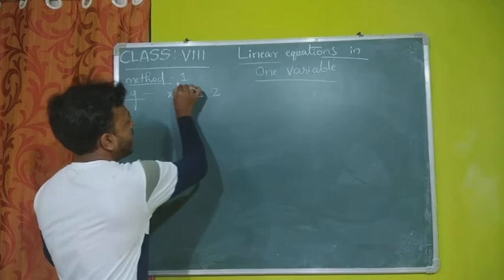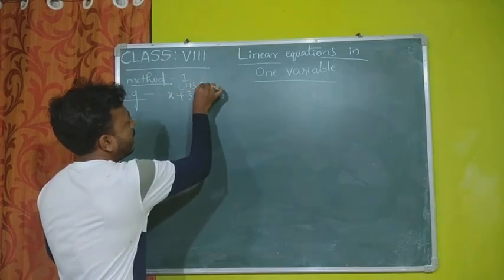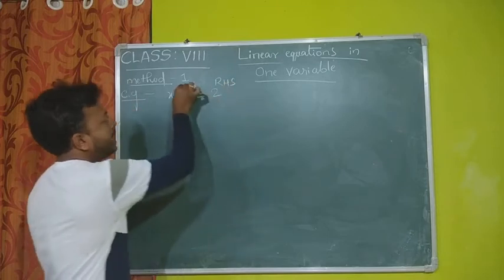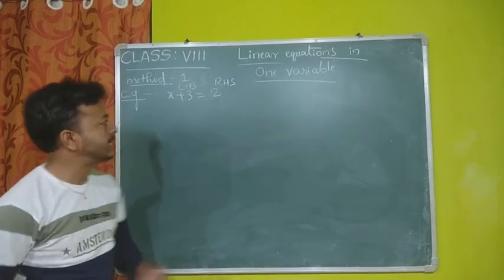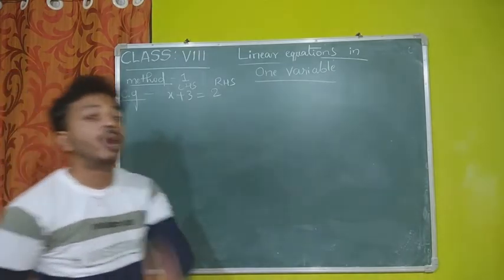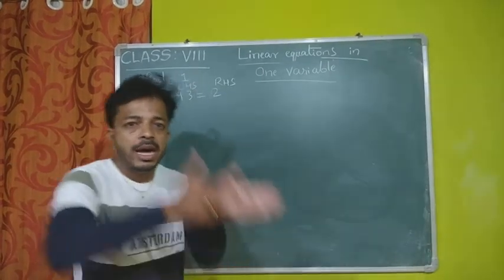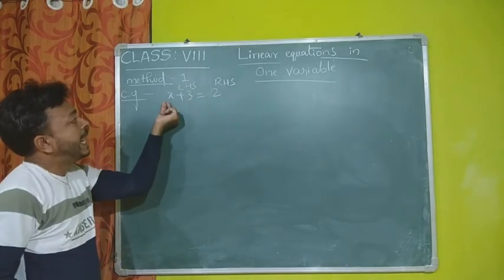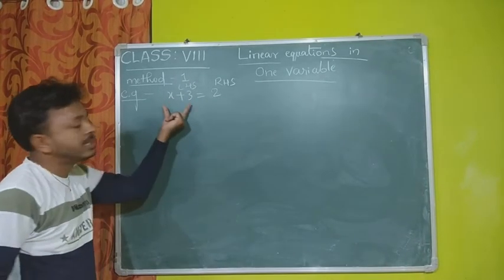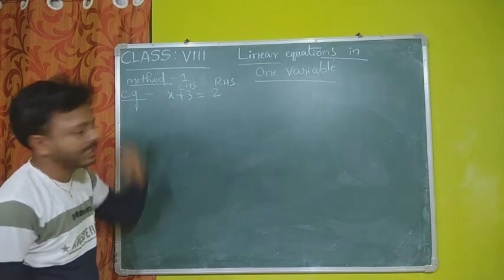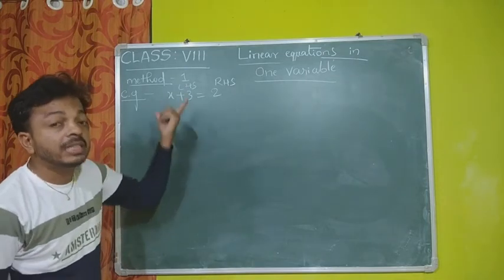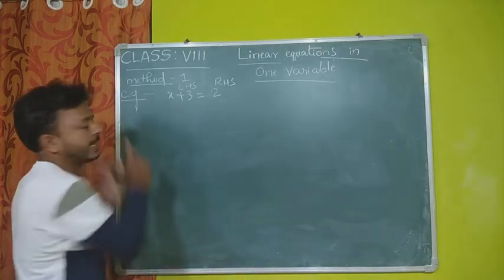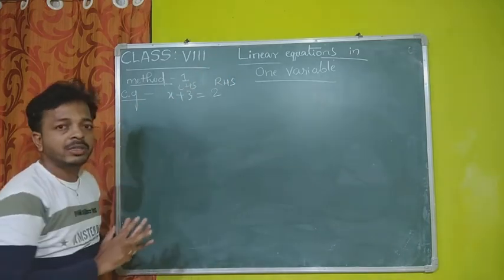This is the LHS — left hand side — and this is the RHS — right hand side. I said one side only variable, another side constant. Here on the LHS, x is the variable and 3 is the constant. I want to make only the variable on this side, and all the constants on that side. So I don't want this plus 3 here.